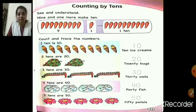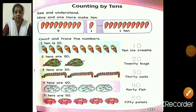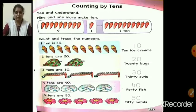Look here. In the first group we have nine carrots, and in the second group we have one carrot. So nine plus one is how much? Count on your fingers and tell me. In the third group we see 10 carrots. Why 10 carrots? Because nine plus one is 10.